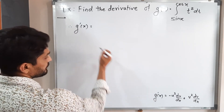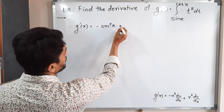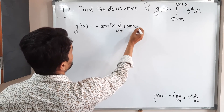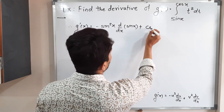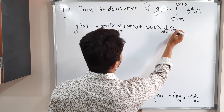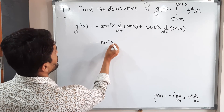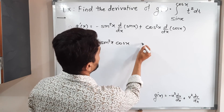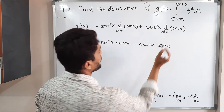Now let us put back the values of u and v. The value of u is sine x, so we have minus sine squared x. The derivative of u, which is the derivative of sine x, is cos x. The value of v is cos x, so we have plus cos squared x. The derivative of v, which is the derivative of cos x, is minus sine x. So the required answer is: minus sine squared x times cos x, plus cos squared x times minus sine x.